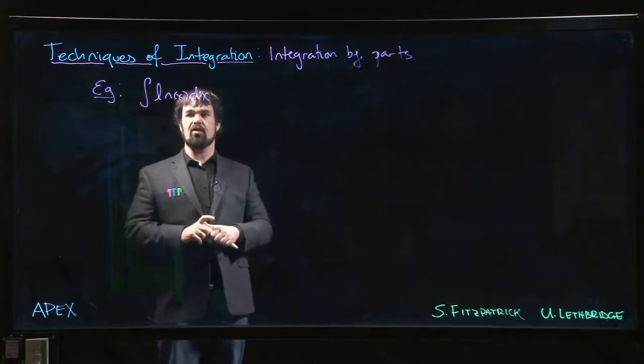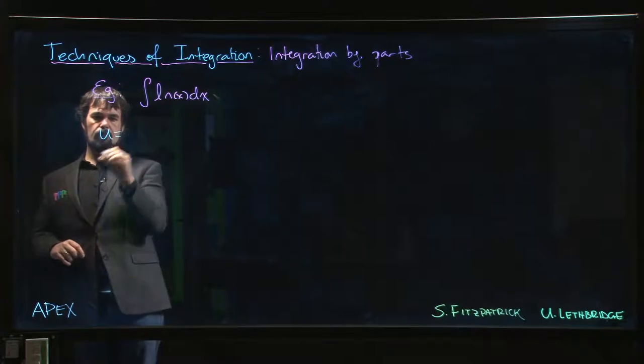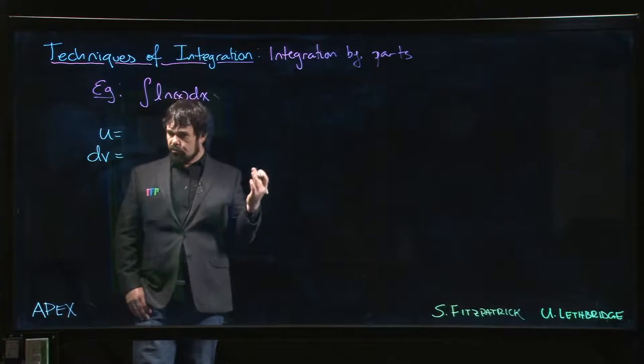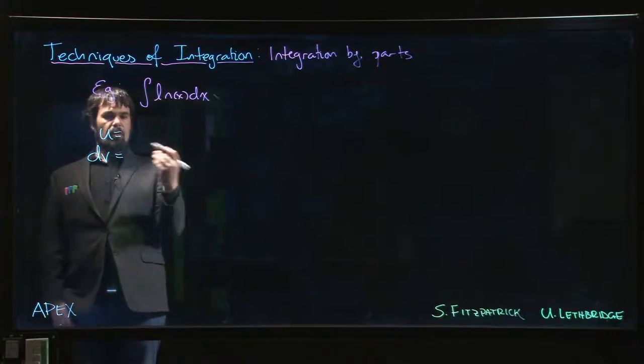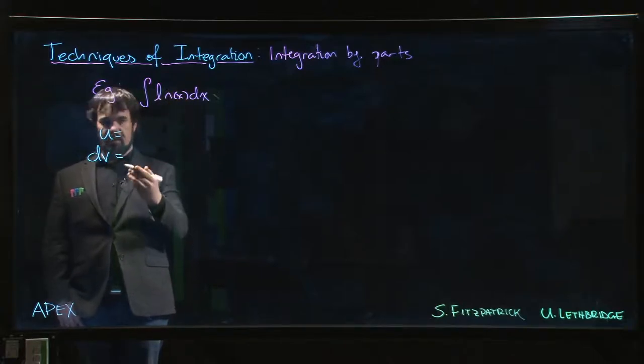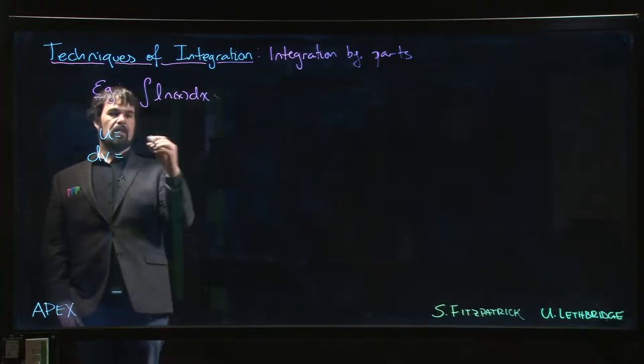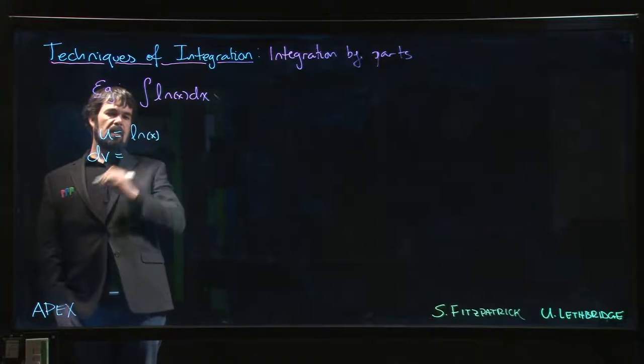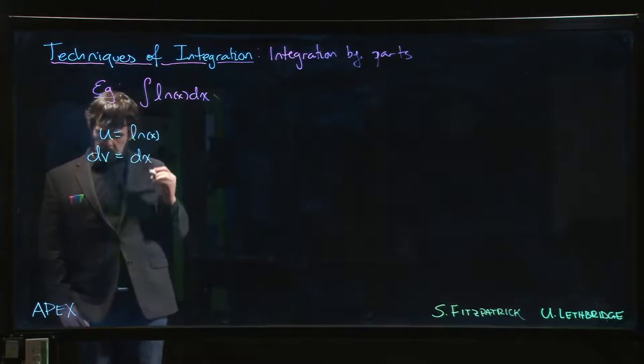We have to choose our u and we have to choose our dv. If you think about it for a second, there's really no choice here because if we don't know the antiderivative, I can't include the log as part of dv because I'd just be back to dealing with how do I take that antiderivative. So that means the natural log must need to be u, and dv is then simply dx.